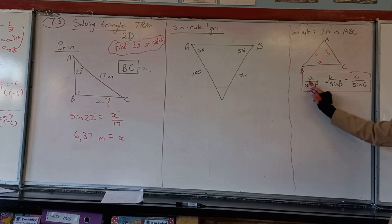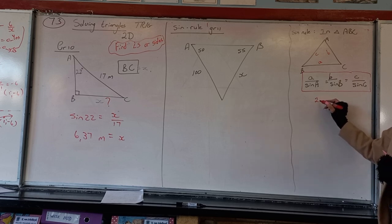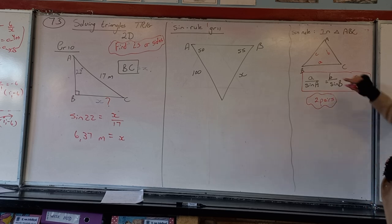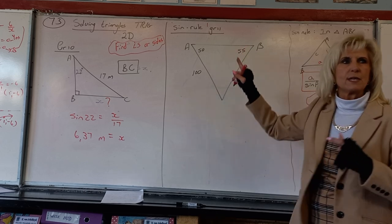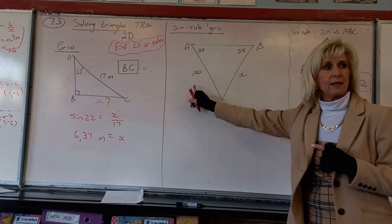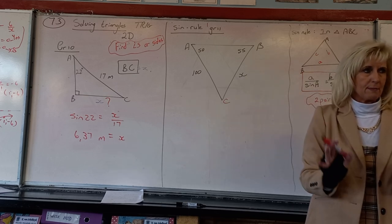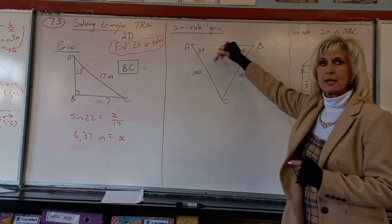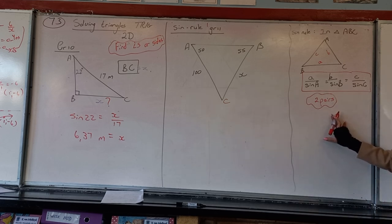The key idea is pairs: a side and the angle opposite to it always go together. So a/sin A, b/sin B, c/sin C — each is a pair of a side and its opposite angle. You must have a complete pair (side and angle known) and a half pair (one unknown). Looking at this sketch, the pair given is 55° and 100, because they are opposite each other.